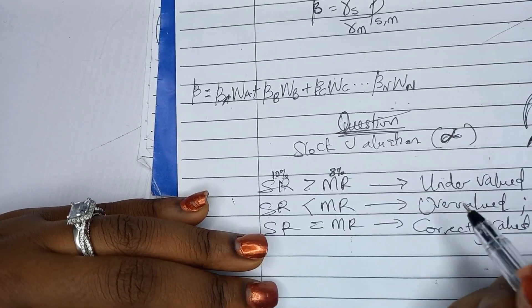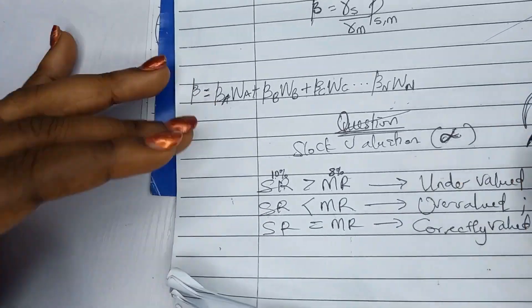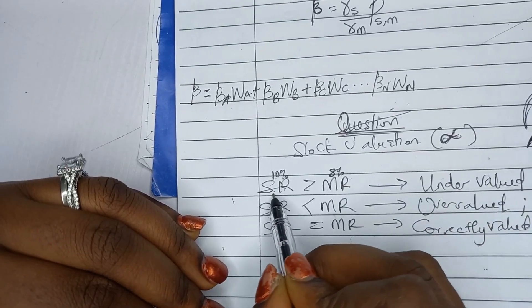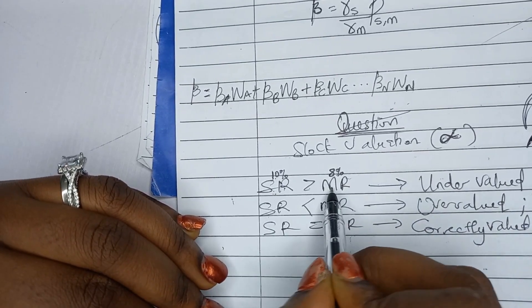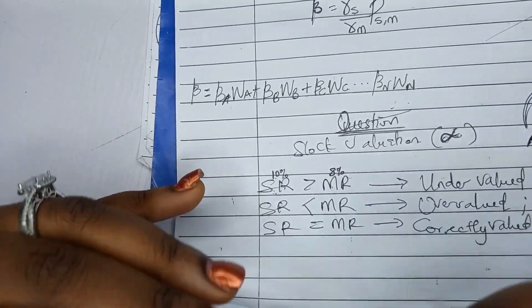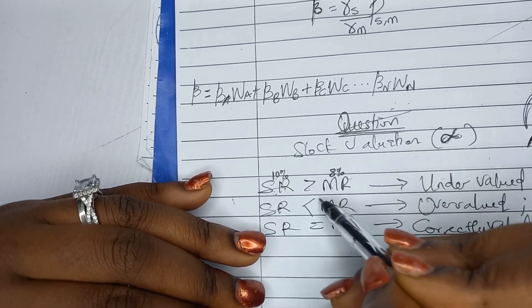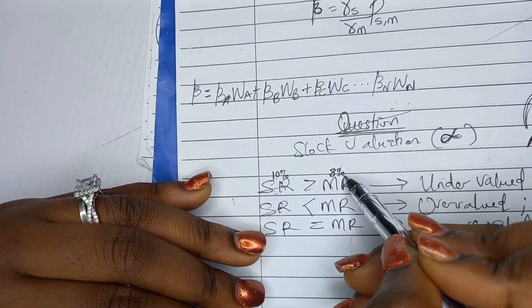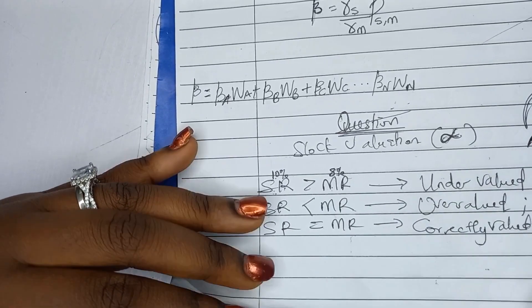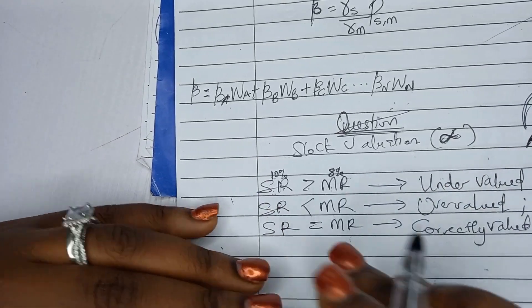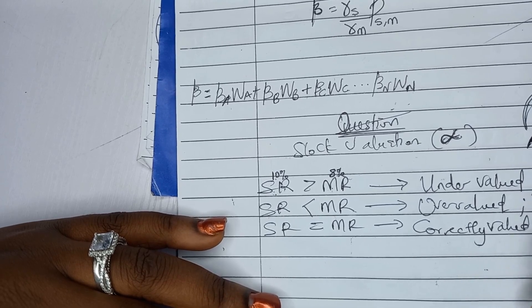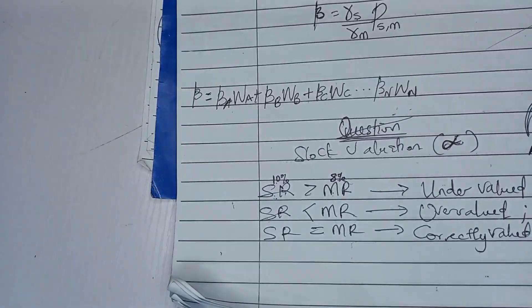For example, if the stock is paying you 10% but the market predicted only 8%, the market has undervalued the stock. As an investor, you go and buy more of it, because the market is pricing it lower than what it actually delivers. If you're in an exam and you can remember this rule, you'll know to buy more of the stock.